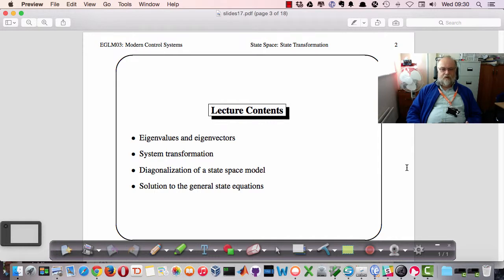Then we'll talk about system transformation and how that approach works. We'll prove that the system transformation does not change the eigenvalues, and then we'll see how we can use it to diagonalize the state-space model into the normal form. And then we'll use that normal form to solve general state equations.